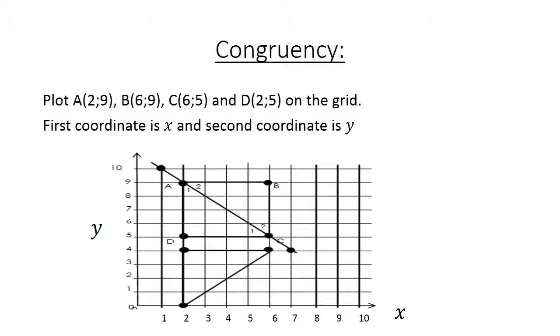There we have the first one, A at 2 and 9, B at 6 and 9, C where X is 6 and Y is 5, and D where X is 2 and Y is 5.